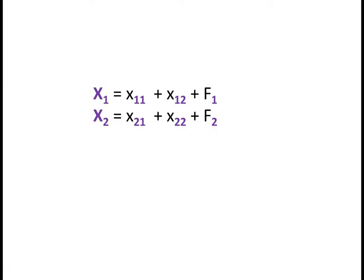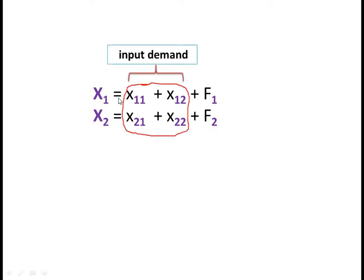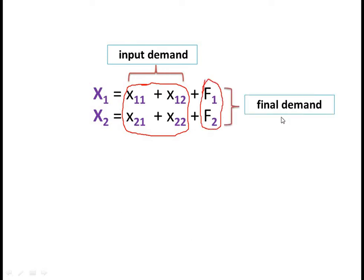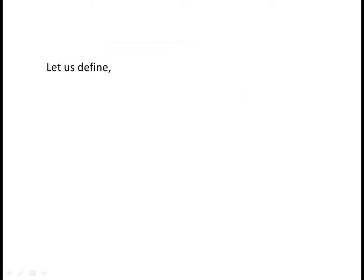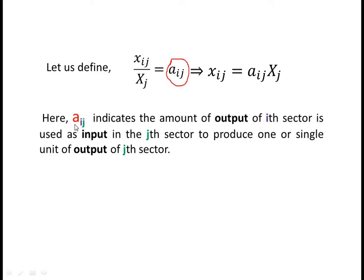In these two output flow equations, one portion is input demand and the other is final demand. Let us define xij divided by Xj equal to aij, which implies xij equals aij times Xj. Here aij indicates the amount of output of the i-th sector used as input in the j-th sector to produce a single unit of output of the j-th sector. aij is called the input coefficient.